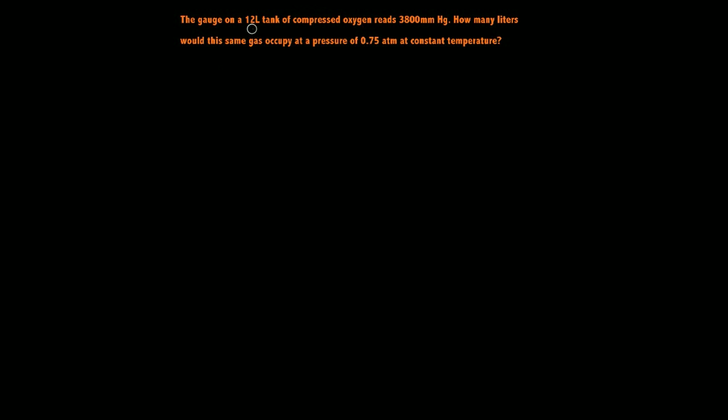So let's get to it. The gauge on a 12 liter tank of compressed oxygen reads 3,800 millimeters of mercury. How many liters would this same gas occupy at a pressure of 0.75 atmospheric units at constant temperature?